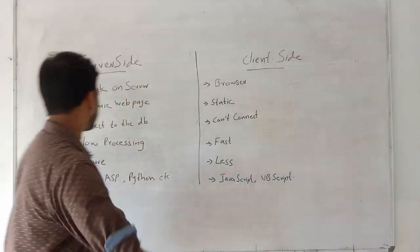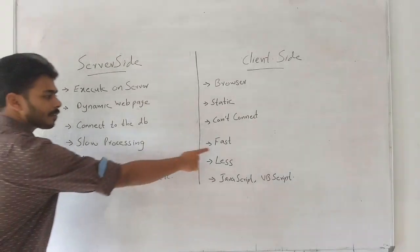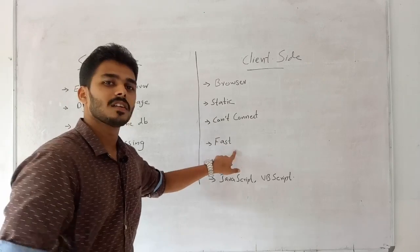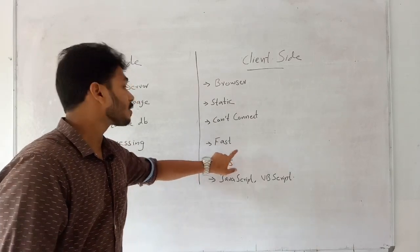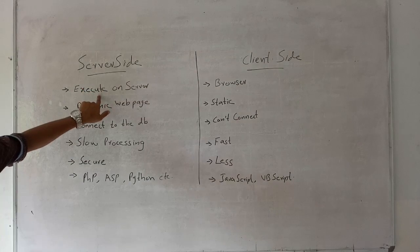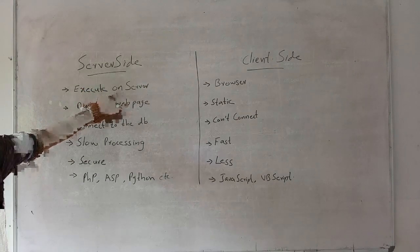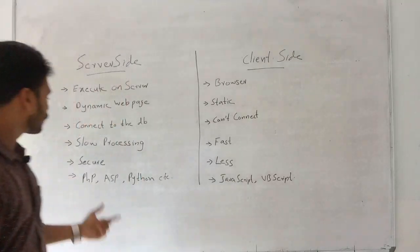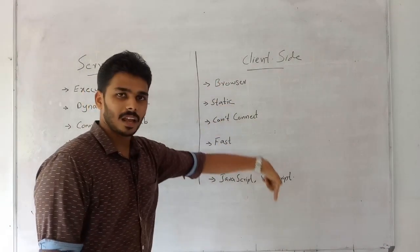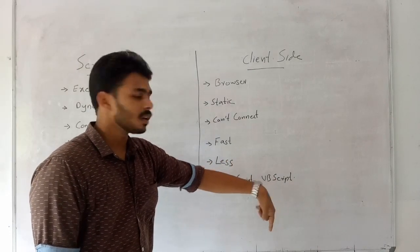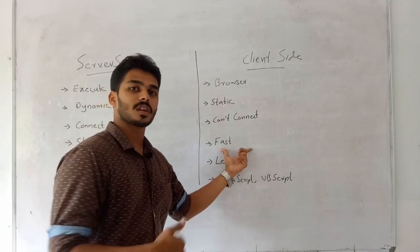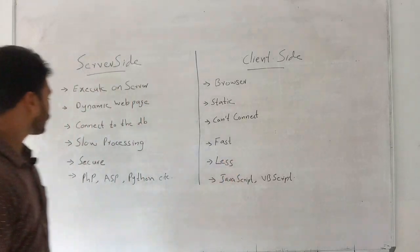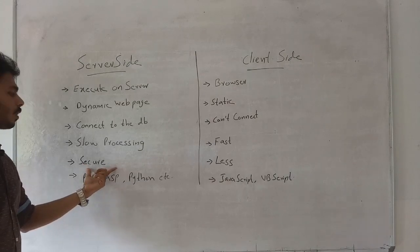The next point is processing speed. Server-side scripting is slow processing because it executes on the server. Client-side scripting is fast processing because it executes on the client's computer or browser, making it fast and responsive.